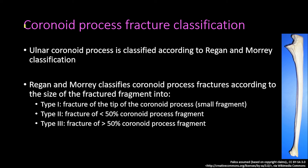Now let's discuss the coronoid process fracture classification. The ulnar coronoid process is classified according to the Regan and Morrey classification, which classifies coronoid process fractures according to the size of the fractured fragment into three types: Type 1, Type 2, and Type 3.